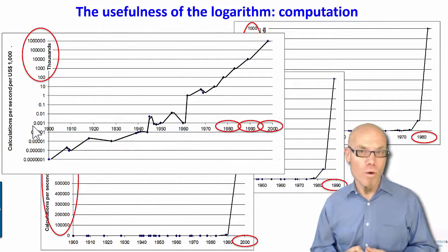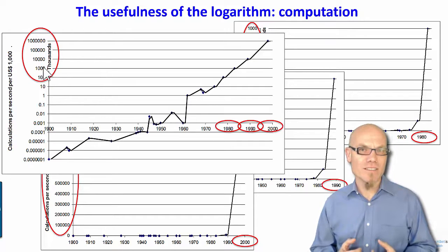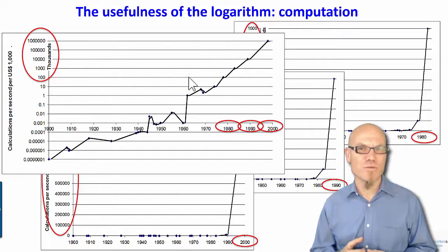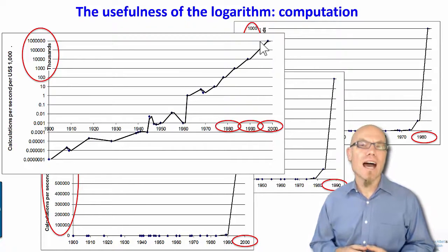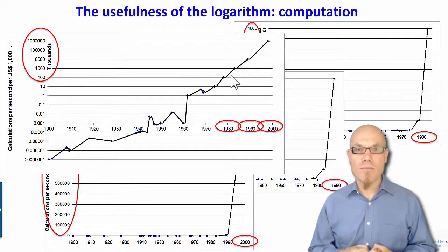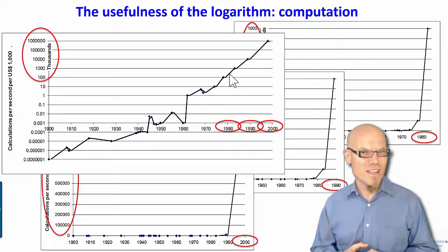If we take the logarithm on the y-axis, we can see there are very large steps between each one of the horizontal lines. This is the logarithm of base 10 — we have 1000, 10,000, 1 million — and there's a very straight line during the decades of 1980, 1990, and 2000. Computational power has increased at an exponential rate actually since the 1900s; it's an impressively straight line that we can detect here.